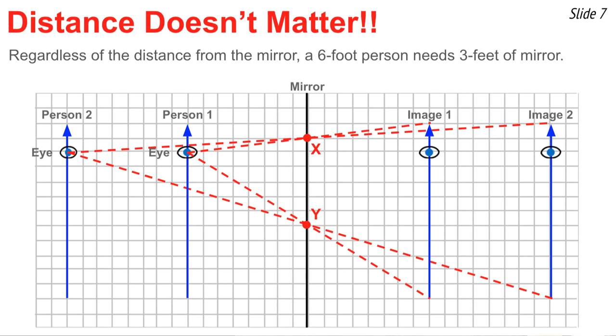X and point Y, the top-most and the bottom-most point, remain the same for that six-foot-tall person who keeps their eye in the same position and is looking at their image that's on the opposite side of the mirror.